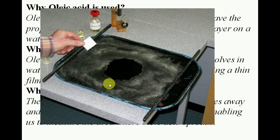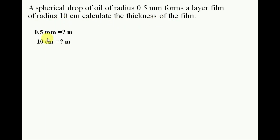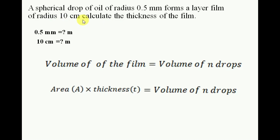Let's solve a question: A drop of oil of radius 5 mm is forming a film of radius 10 cm. Calculate the thickness of the film. First, convert millimeters and centimeters to meters. Then find the volume of the spherical drop and the area of the circular film. Using area × thickness = volume of one drop, we can calculate the thickness.